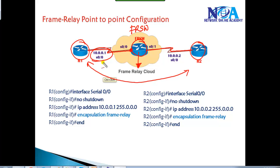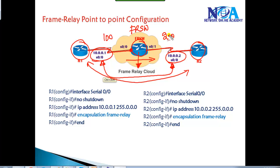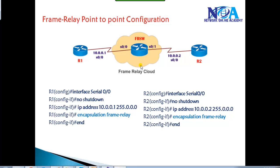We are going to assign IP address 10.0.0.1 here and ensure that 10.0.0.1 is able to communicate with 10.0.0.2, the connected interface on the opposite side over the frame relay switch. We'll be using DLCI values: 100 on this side and DLCI value 200 on the other side, because actual forwarding inside the frame relay network will happen based on DLCI values. For basic point-to-point connections, we go to the interface S0/0, give no shutdown and the IP address.